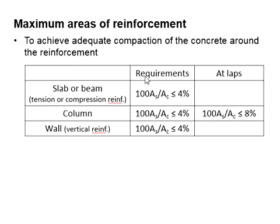Next, we deal with the maximum area of reinforcement. Under normal circumstances, the 4% rule is applied. That means your reinforcement area should be less than 4% of the cross-sectional area of the member.